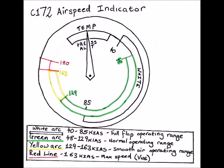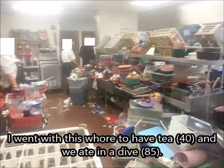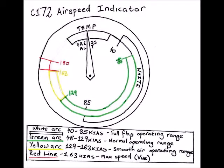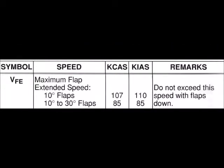So here goes the story. I went with this whore to have tea — so 'whore' represents 4, and T represents tea, so 4 T — and we ate in this dive. The number 8, 'dive' rhymes with 5, so you've got 85. I wish I could just flap my wings and fly away like a bird. So this helps you remember that between 40 and 85 is your white arc, which is your full flap operating range.